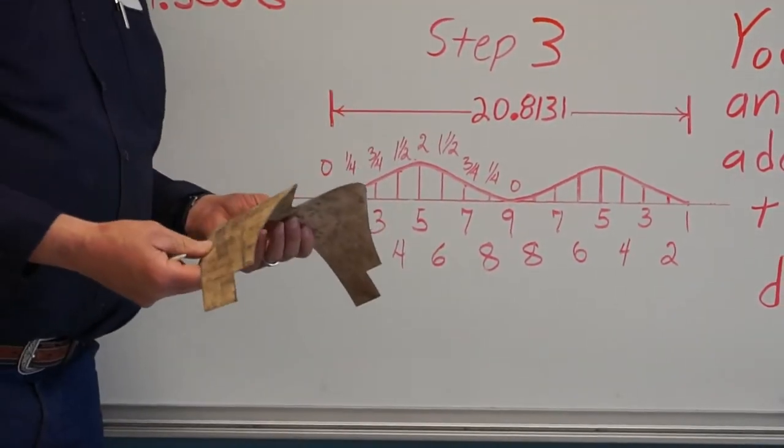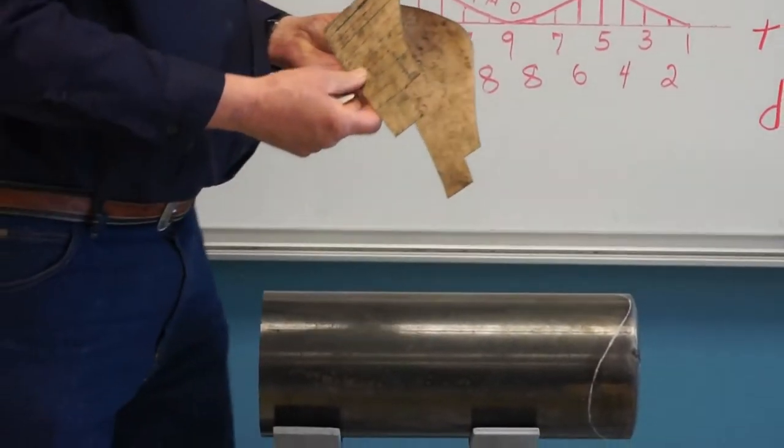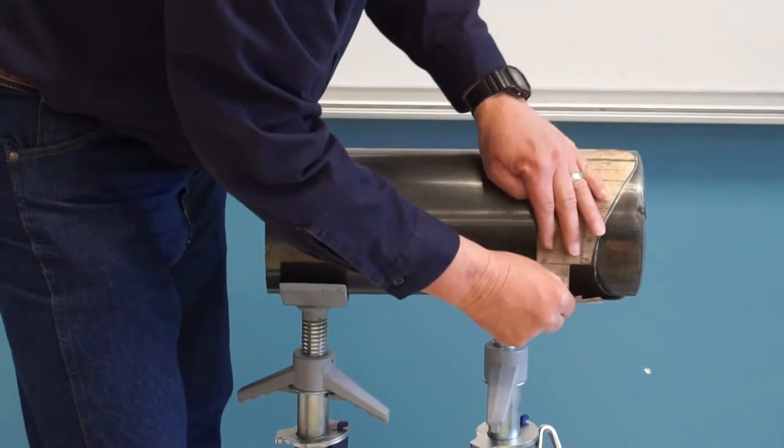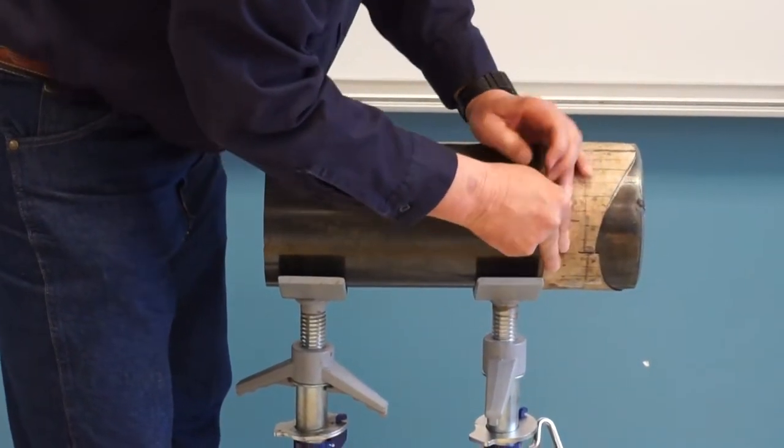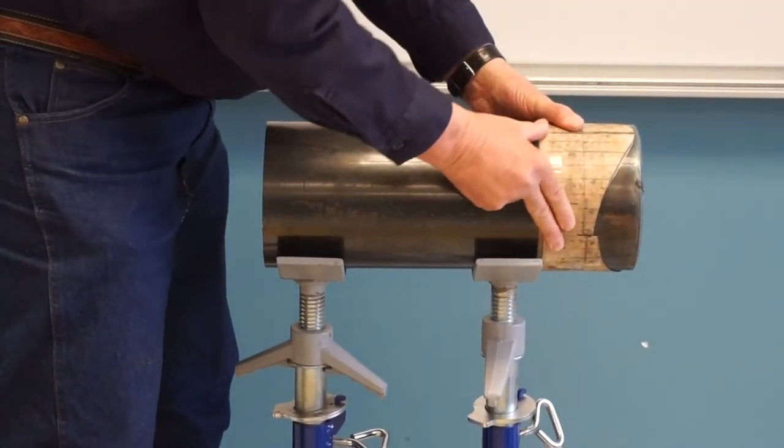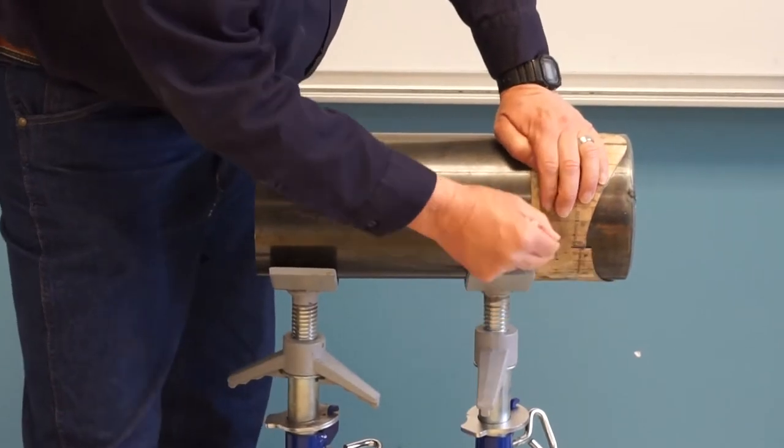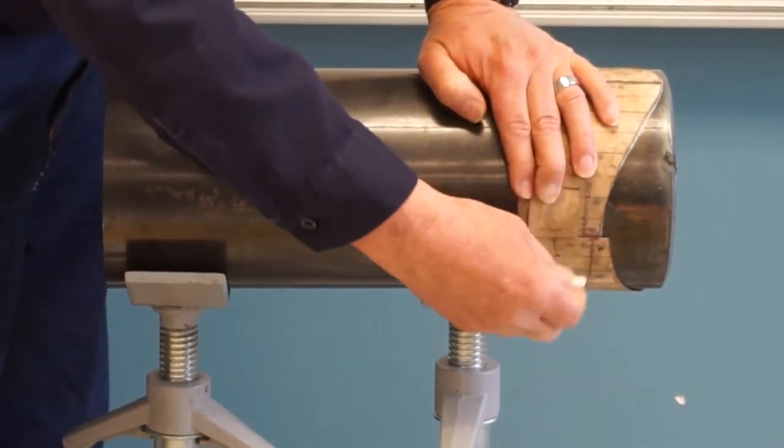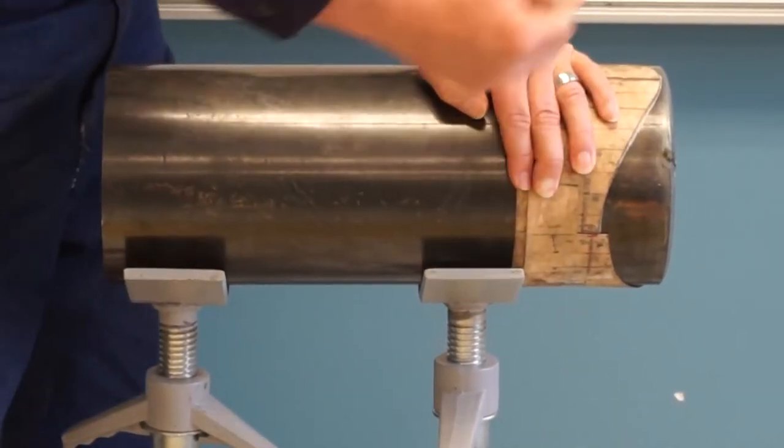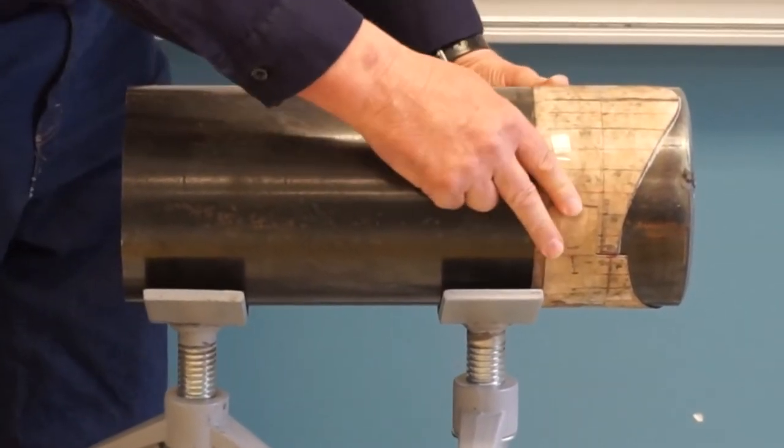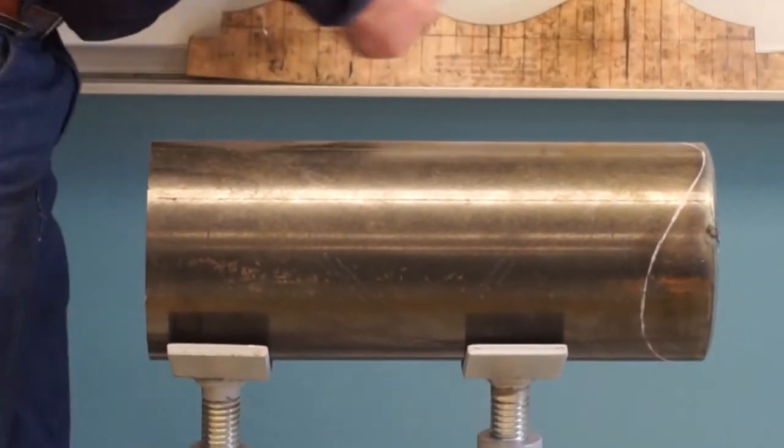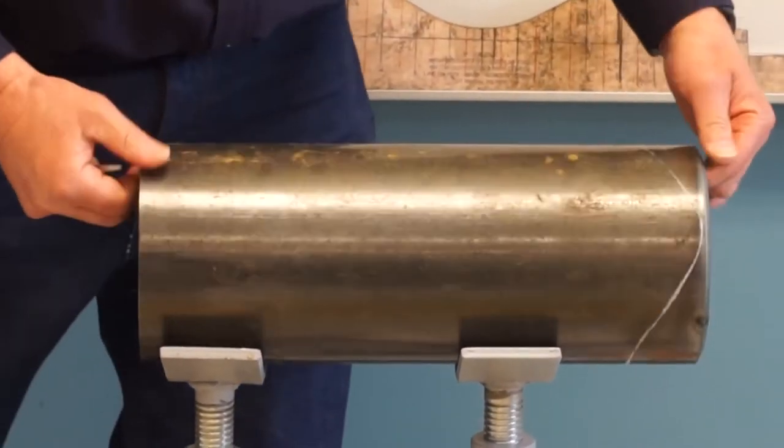So now I'm going to show you how you put it on your pipe and lay out your pipe. These runoff tabs here are real handy to hold it together. You put it on your pipe, you take your soapstone, you trace all the way around, which I've already done. When you get done, it should look like this.